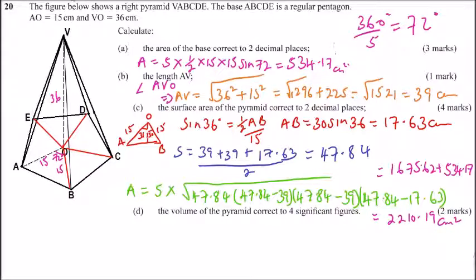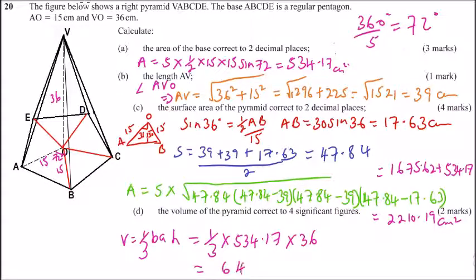Then we are supposed to get the volume of the pyramid. Volume equals a third base area times height. We already have the base area, multiply by 534.17, and the height is 36. That should give you 6419.64 using your calculator. This is centimeter cubed, which is roughly 6420 to 4 significant figures.